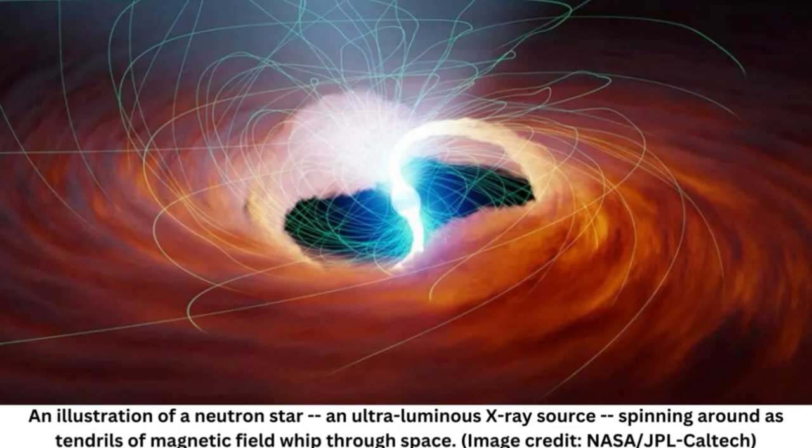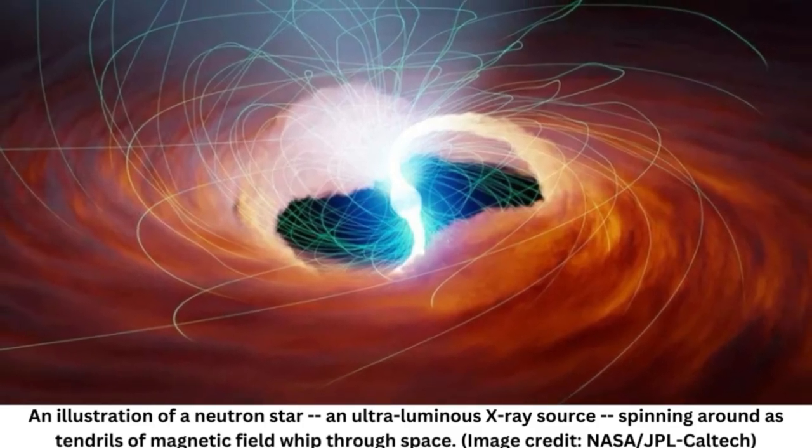New observations published in the Astrophysical Journal from NASA's Nuclear Spectroscopic Telescope Array, NuSTAR, which sees the universe in high-energy X-rays, confirmed that one particular ULX, called M82X2, is definitely too bright.